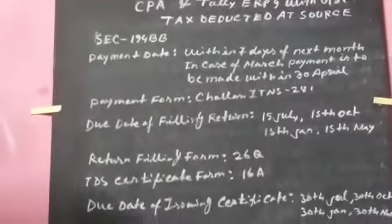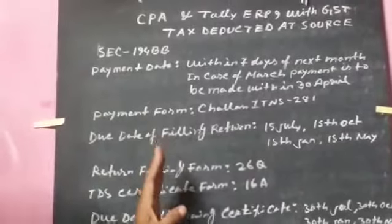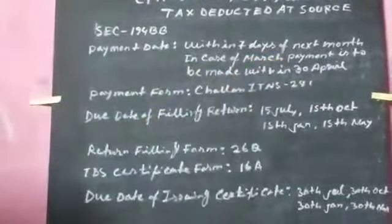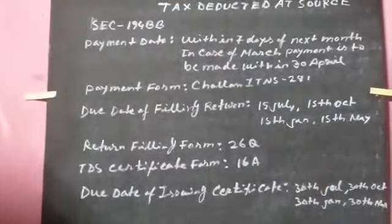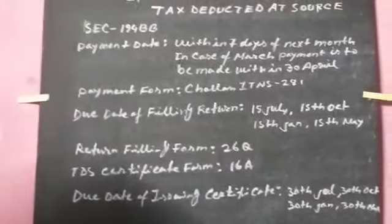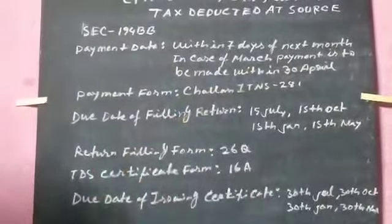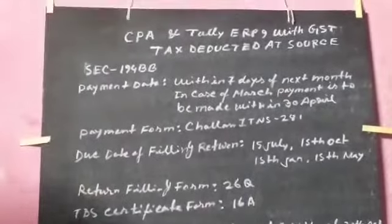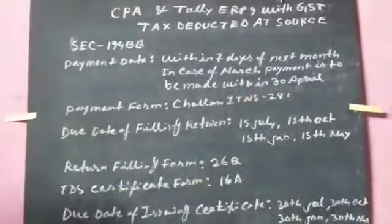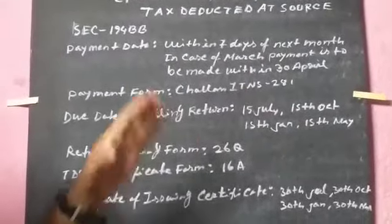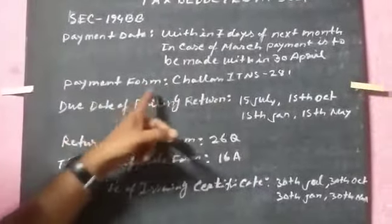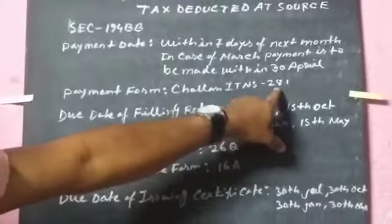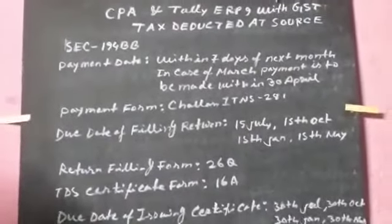When there is a correction under that section, it will get it from the third section. If the payment is in March, then the payment is in March. The payment period is 30 days.